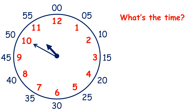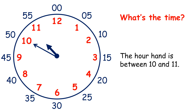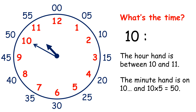Now what time does this clock show? The hour hand is between 10 and 11, so it's 10 something. And the minute hand is on 10, and 10 times 5 is 50, so the time is 10:50.